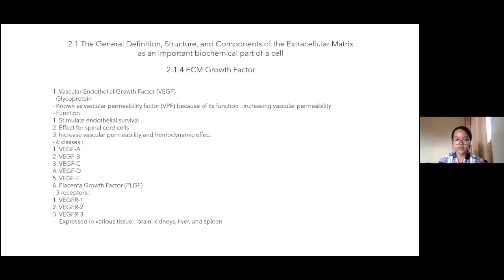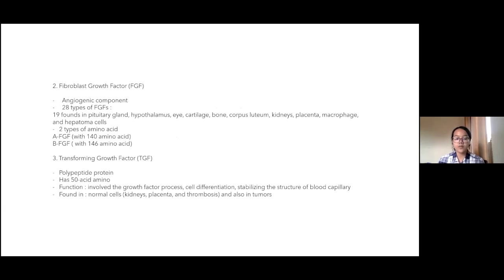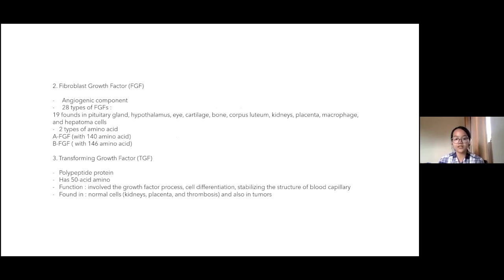The second growth factor is fibroblast growth factor, an angiogenic factor that can form cavern complexes. There are 28 types of fibroblast growth factors, with 19 found in the pituitary gland, brain hypothalamus, eye, cartilage, bone, corpus luteum, kidneys, placenta, and hepatoma cells. This growth factor functions in body homeostasis and also mediates the process of angiogenesis.